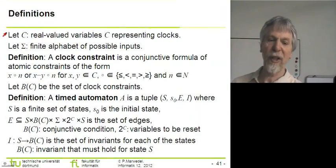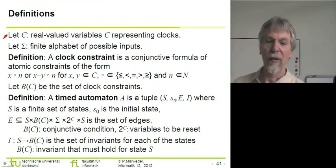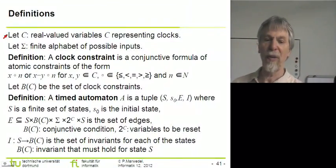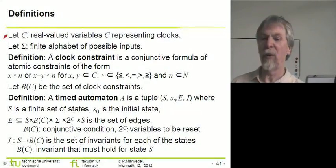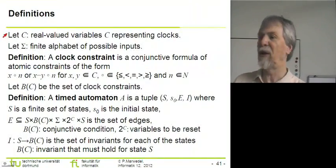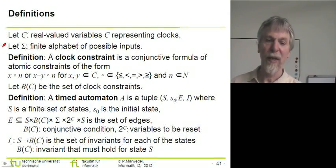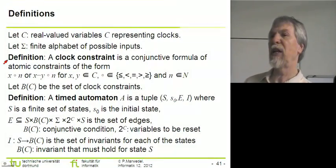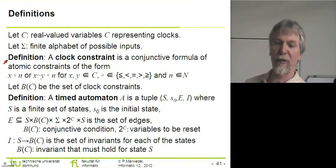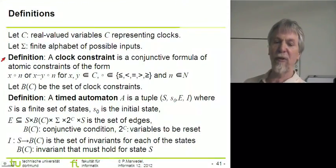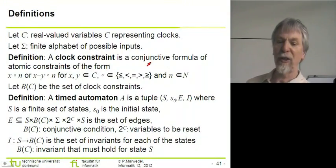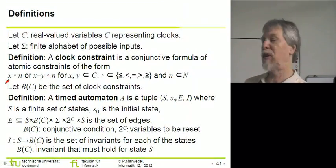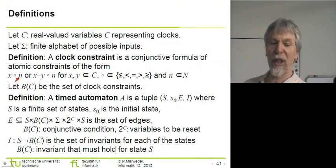Now let's look at timed automata in a more formal way. We have to consider the set of clock variables. C denotes the clock variables, which we can think of as real valued variables. Then sigma represents the finite alphabet of possible inputs. We have to define possible syntactical forms for clock constraints.